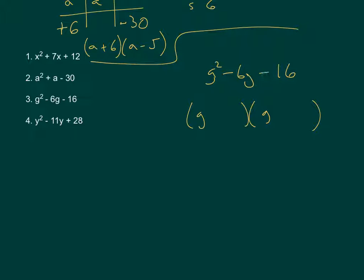Looking at this, one of them is going to be negative, one of them is going to be positive. So I can put those in. And when we add those two numbers that multiply to make minus 16, we're going to get a negative 6. So they need to subtract to give negative 6.